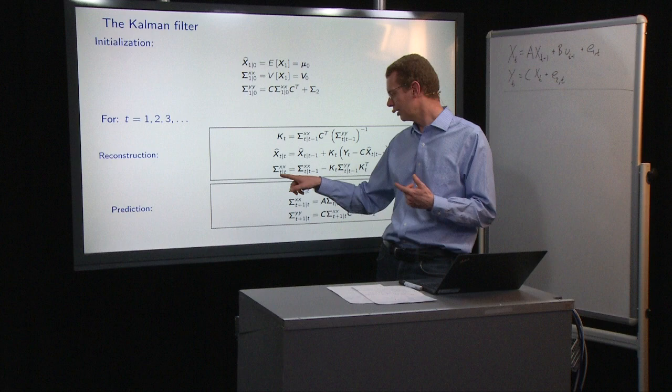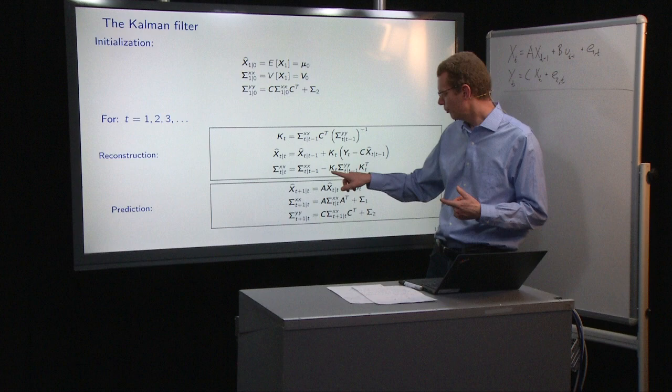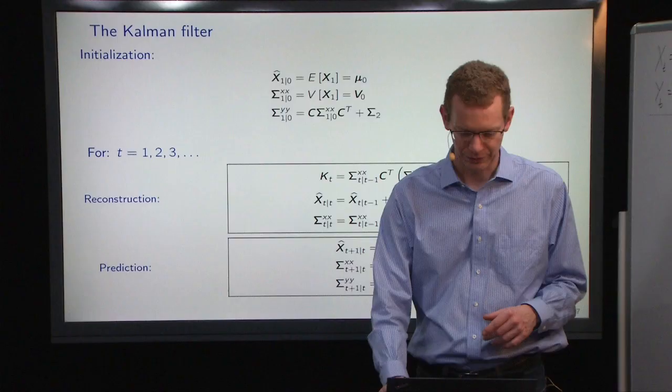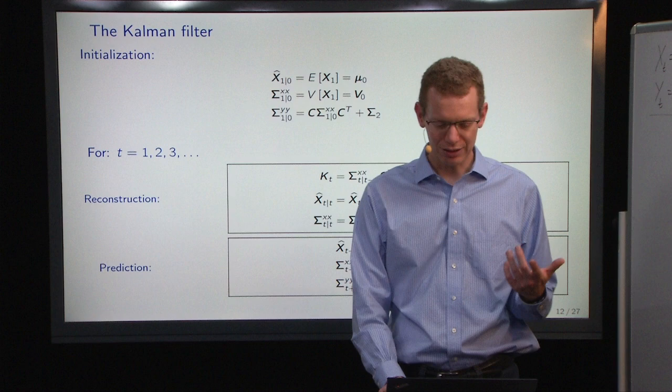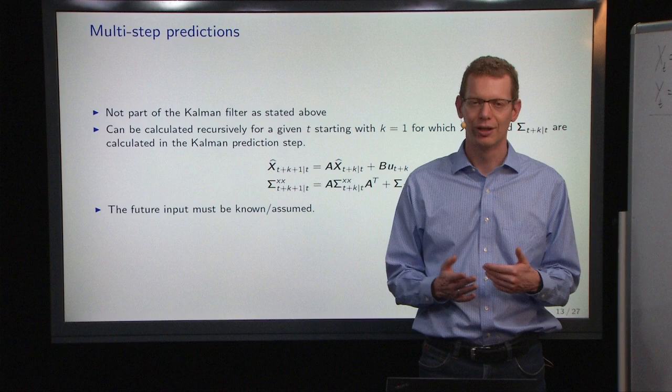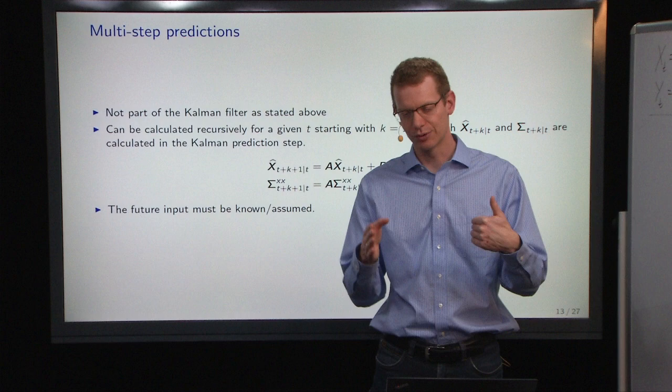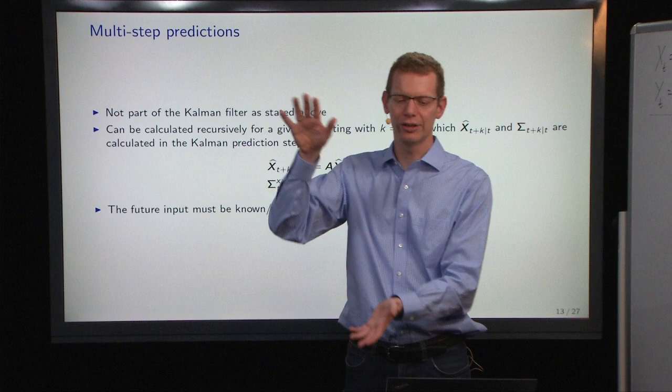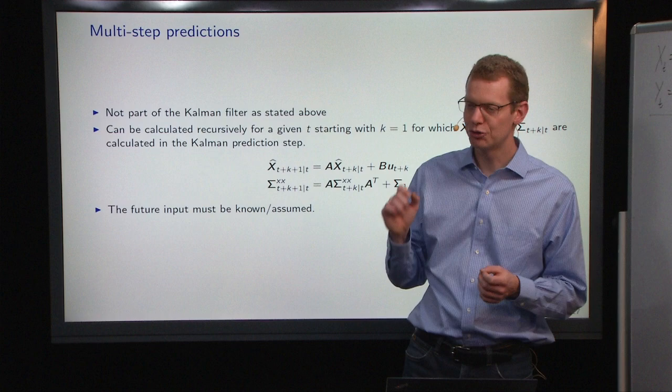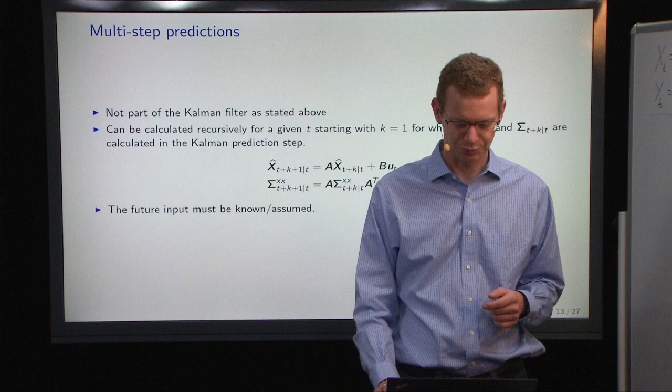The covariance of XT given T is the predicted covariance minus the information that you get from the observation. If you want to do multi-step predictions in a Kalman filter, then you have to do them one at a time — you go from XT to XT plus one, plus two, plus three, one step at a time — and you just see that your uncertainty grows. We'll get back to that next week. One thing is that we have to assume that the input is known; otherwise, we have to start modeling that as well.